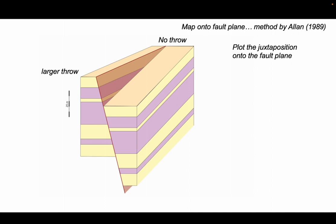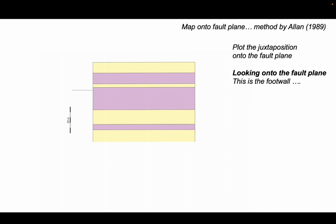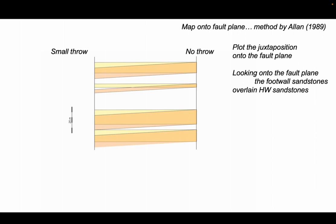We're going to plot juxtaposition onto the fault plane. So this is looking onto the fault plane and imagine looking across the fault plane onto where the sandstone beds intersect the fault plane in the footwall side. Let's just gray out the shale so we just see the sandstones. Now let's put some offset in. So now I've drawn the hanging wall on in that darker orange color. And we've got no throw on the right and a small throw on the left-hand side. Let's gradually increase the throw on the left-hand side of the diagram.